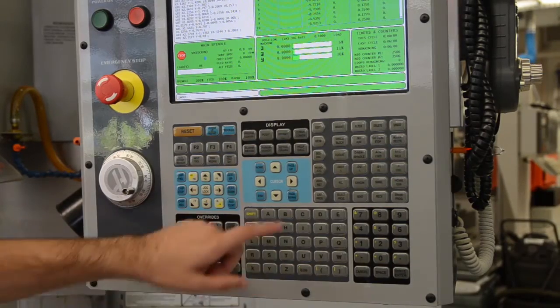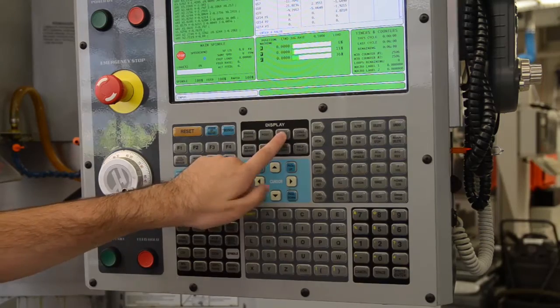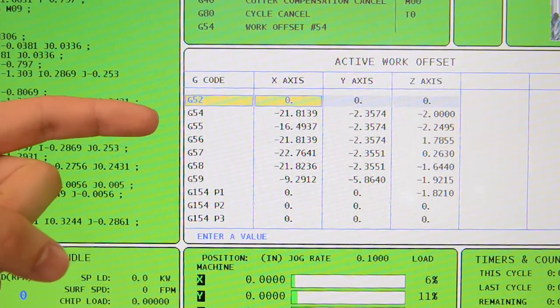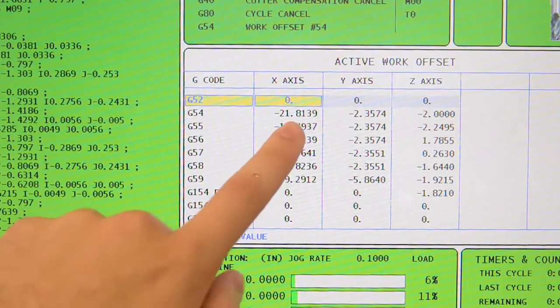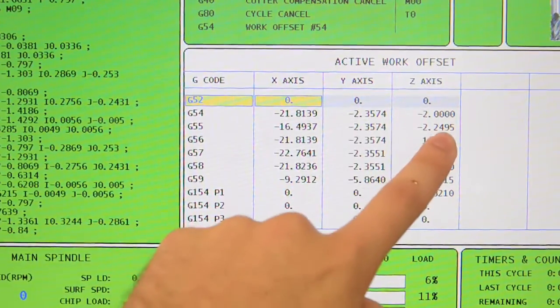From the memory tab, you're going to click the offset button. You can see we have our G54 offset with our x-axis, y-axis, and z-axis coordinates.